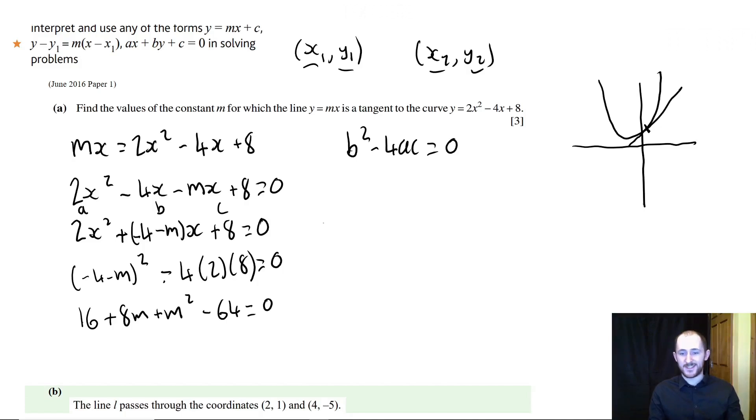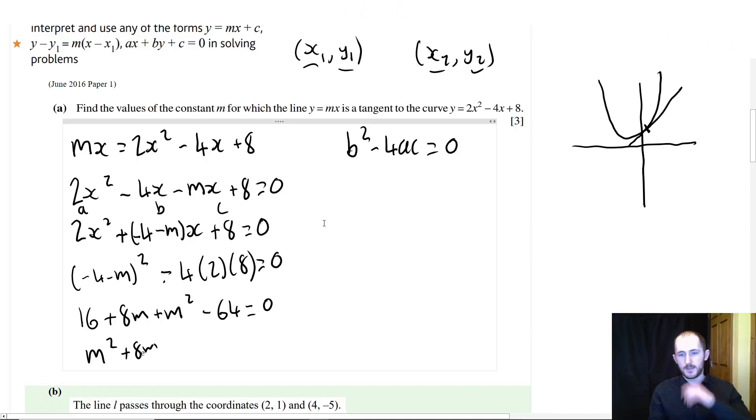Then we have plus 4m plus 4m, so we have plus 8m plus m squared. And then we have 2 times 8 is 16, times 4 is 64. So minus 64 equals zero. And now this is just a quadratic equation. m squared plus 8m. I just want to rewrite that, just to make it a bit more clear. 8m and then 16 minus 64, well 64 minus 16, it's going to be minus 48 equals 0.